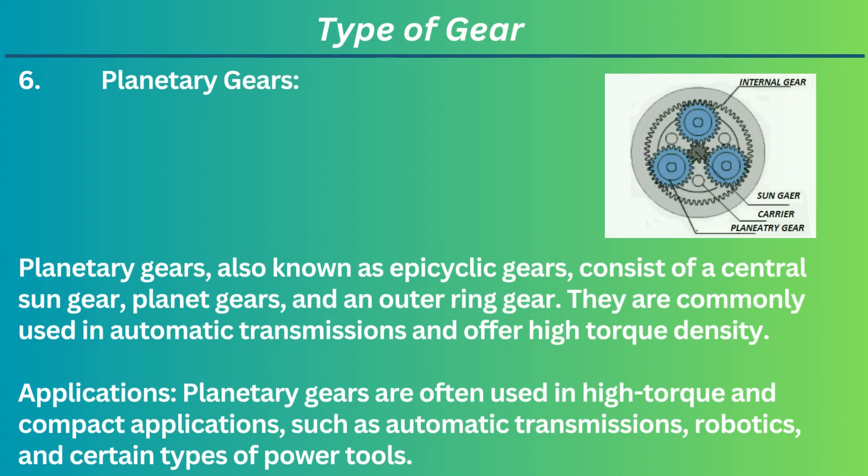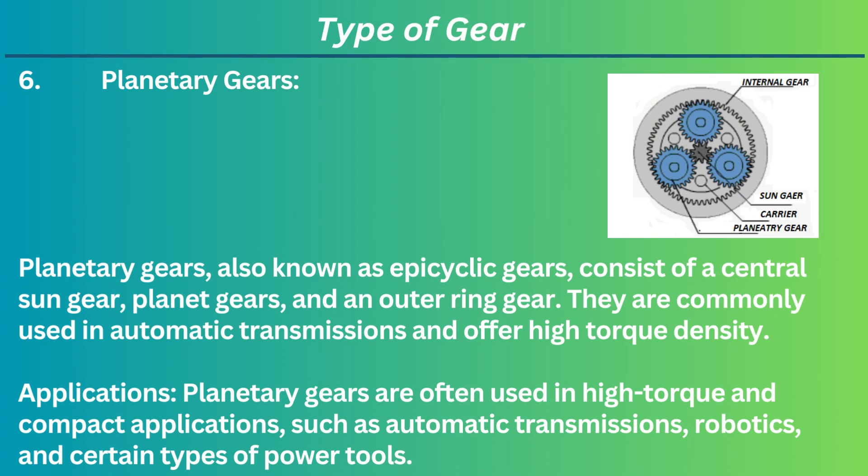6. Planetary gears. Planetary gears, also known as epicyclic gears, consist of a central sun gear, planet gears, and an outer ring gear. They are commonly used in automatic transmissions and offer high torque density. Applications: Planetary gears are often used in high-torque and compact applications, such as automatic transmissions, robotics, and certain types of power tools.